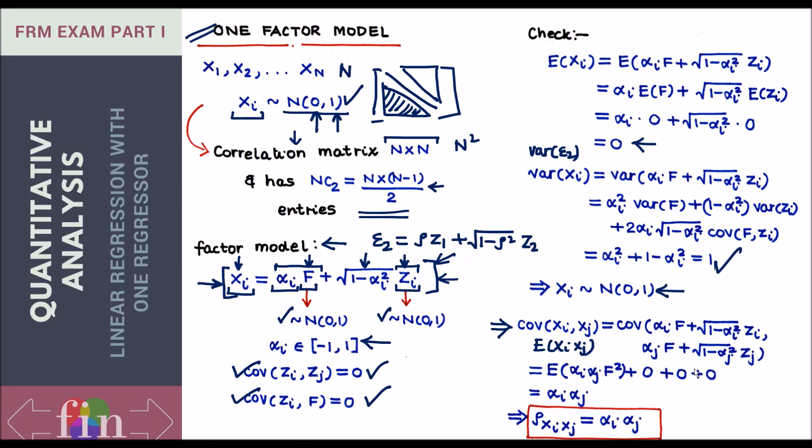So what did this benefit us? Remember the number of correlations I had to estimate without using this model - it was this huge number. After having used this model, all this model required us to do was to estimate alpha i for every asset. So how many estimations do we need to do? We need to do n estimations, one estimation for every asset. Once I have the alpha for every asset, I can get the correlation between any two assets as just the product of their alphas. Correlation between x1 x2 is just alpha 1 alpha 2. Correlation between x20 and x30 is just alpha 20 times alpha 30. Look at how my burden has reduced. This model basically helped me go from these many estimations to only these 50 estimations if n is 50. That's the beauty of the one factor model.